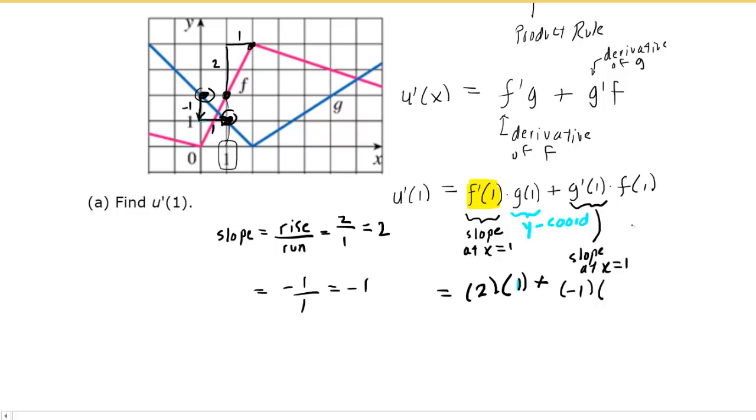And then we'll multiply by f of 1. f of 1 means we have to go back to the red curve that is denoted by the letter f. Here is x equals 1, move up to the curve, and then get the y coordinate of that point, which looks like it's equal to 2. So we would multiply this by 2. The rest is just simplifying. That's going to give us our answer for u prime of 1. So 2 times 1 is 2. Negative 1 times 2 is negative 2. We end up with 0 as the answer to part A.